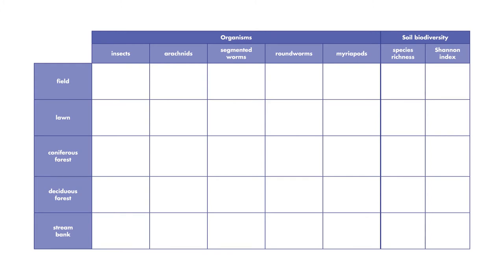We see that the soil sample from the field ecosystem has 8 insects, 5 arachnids, 2 segmented worms, 12 roundworms, and 3 myriopods. We follow the same procedure for the organisms found in each of the other soil samples and record those numbers in our table.